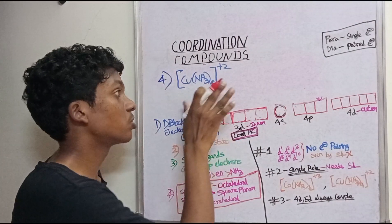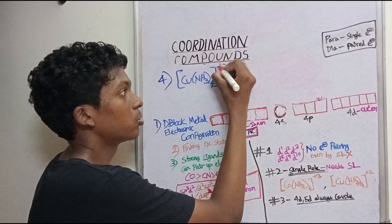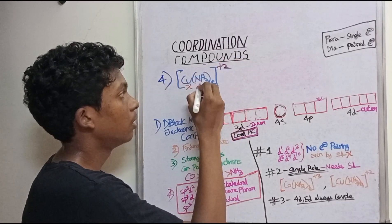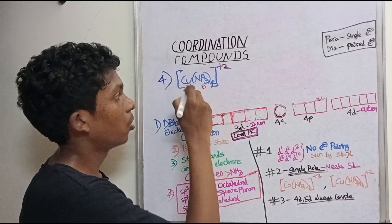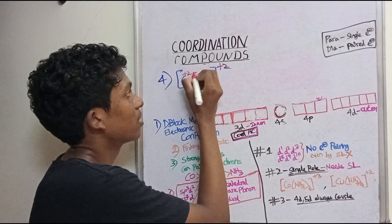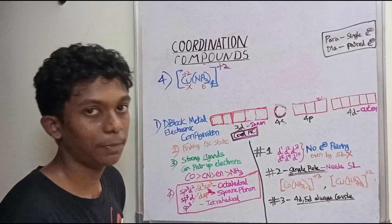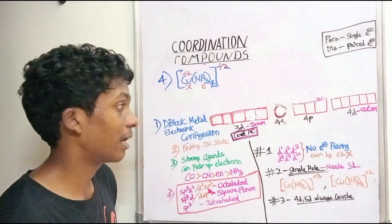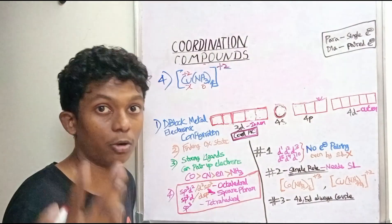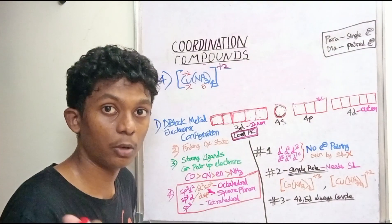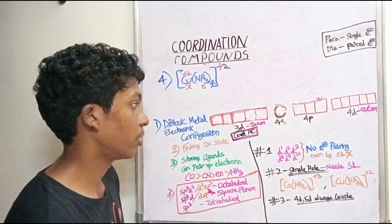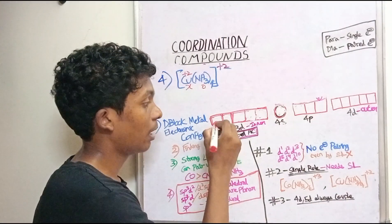First, the oxidation state. The overall charge is plus 2. Ammonia is a neutral ligand, so x plus 0 equals plus 2, meaning x equals plus 2. Copper is therefore Cu²⁺.